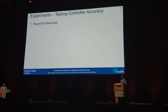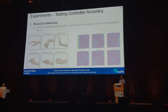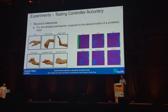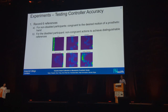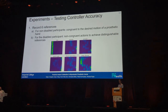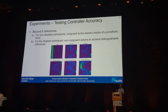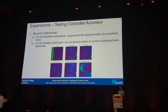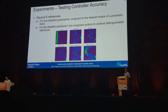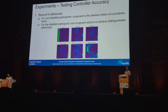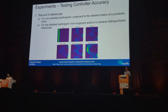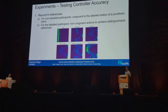The next experiment was to record six references for non-disabled participants, congruent to the desired motion of a prosthetic hand — open, close, pronate, supinate, and tripod grip. For the disabled participant, since these common actions don't always translate well, we got them to do non-congruent actions to achieve distinct references: supinate, pronate, power grip, thumb opposition, and pinky flexion.